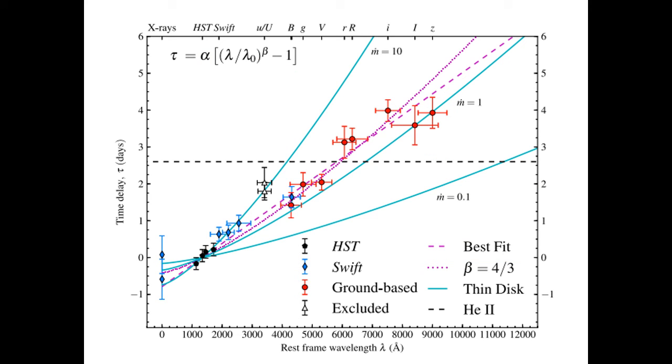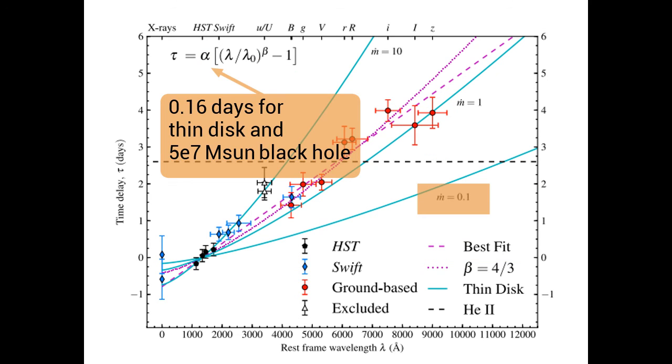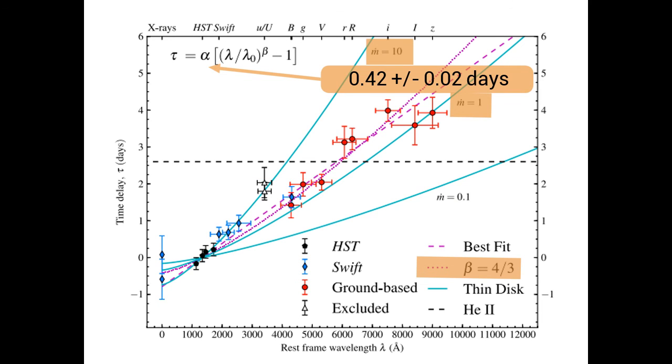For standard thin disk parameters, the prediction for alpha is 0.16 days, a factor of 2.6 smaller than our best fit, assuming the r to the minus three-fourths temperature profile. A better match is achieved by increasing the accretion rate above the Eddington rate. However, at these accretion rates, the disk is unlikely to remain geometrically thin, which violates the assumptions of our model.